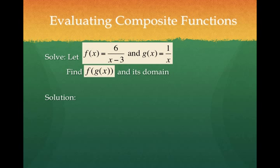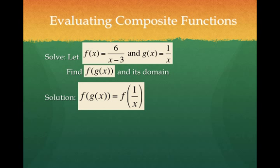Now let's keep it in terms of x. f of g of x, given our function f of x equals 6 over x minus 3, and g of x equals 1 over x.